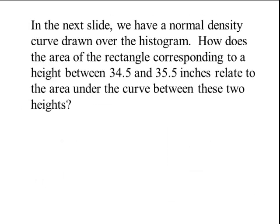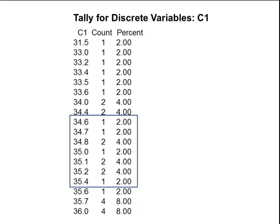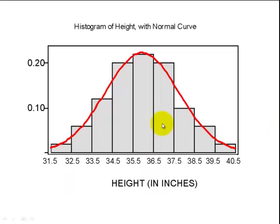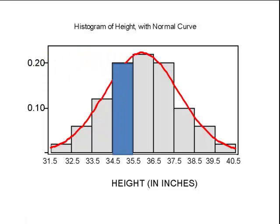On the next slide we have a normal density curve drawn over the histogram. How does the area of the rectangle corresponding to heights between 34.5 and 35.5 inches relate to the area under the curve between those two heights? Looking at the frequency distribution, the heights between 34.5 and 35.5 add up to 20%. On the histogram with the normal curve, the bin for that interval is 20%, showing the relationship between area and probability.